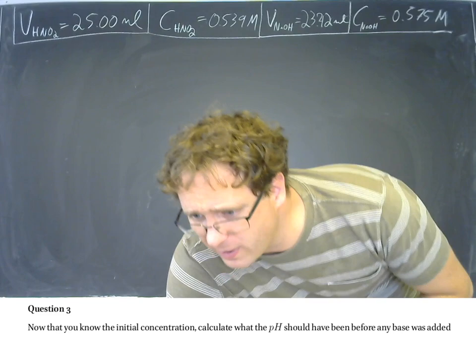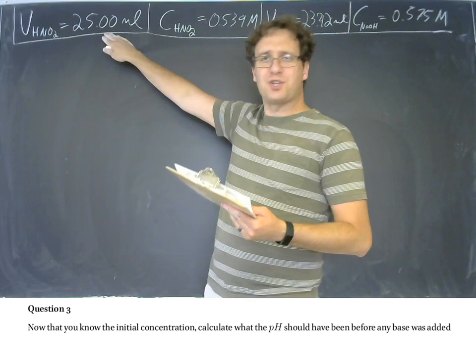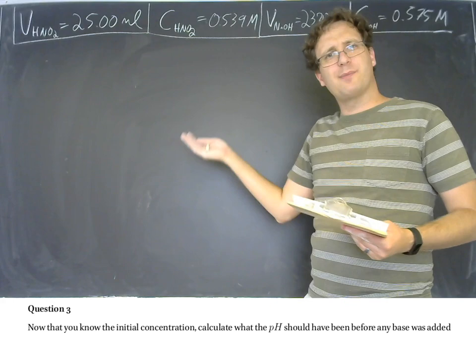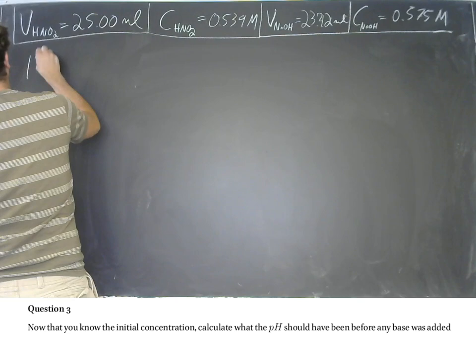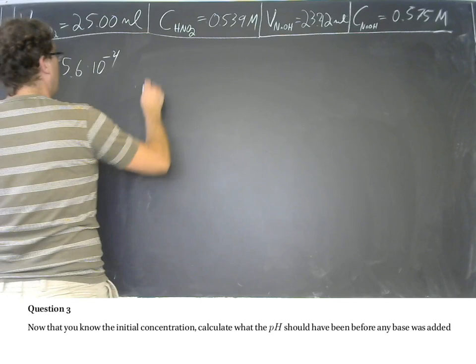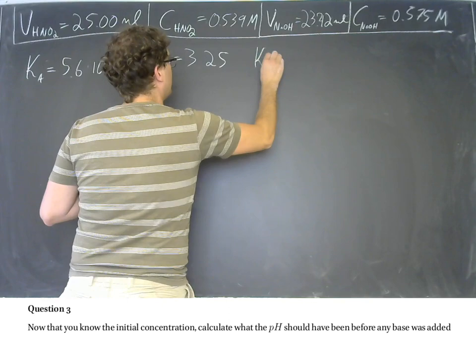But we're going to dig deeper. Can we find what the pH should have been before you added any base? We know the initial concentration of HNO2, but it is a weak acid, not a strong acid. So I can't just take the negative log of that — I need to do an ICE table. The Ka for HNO2 is 5.6 times 10 to the negative 4th, and from that we get a pKa equal to 3.25.